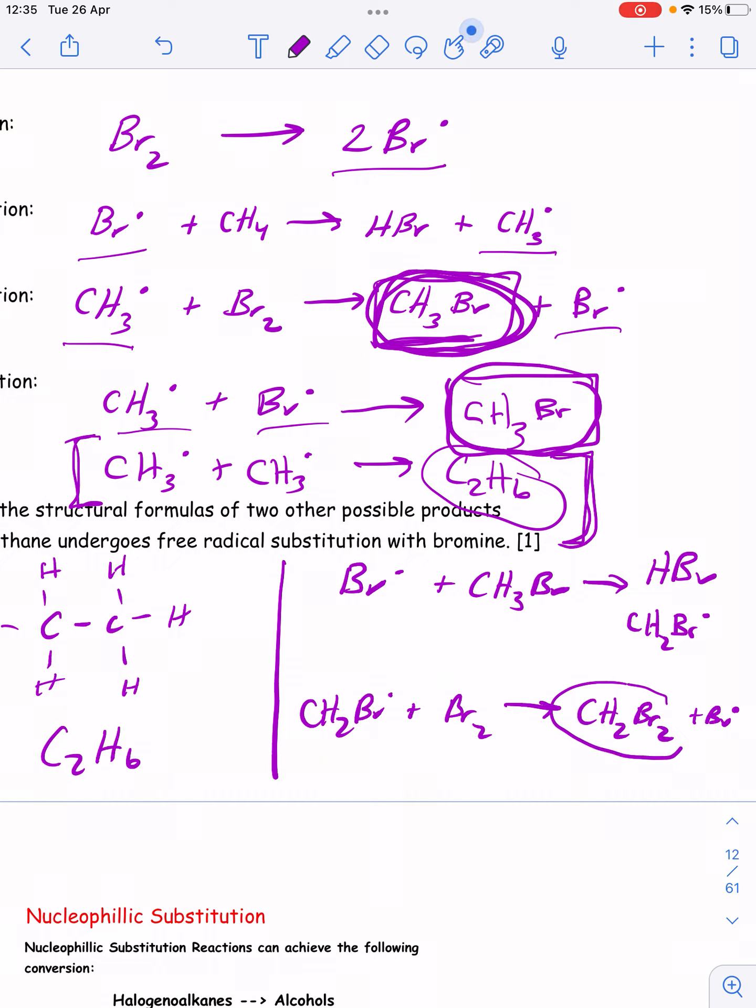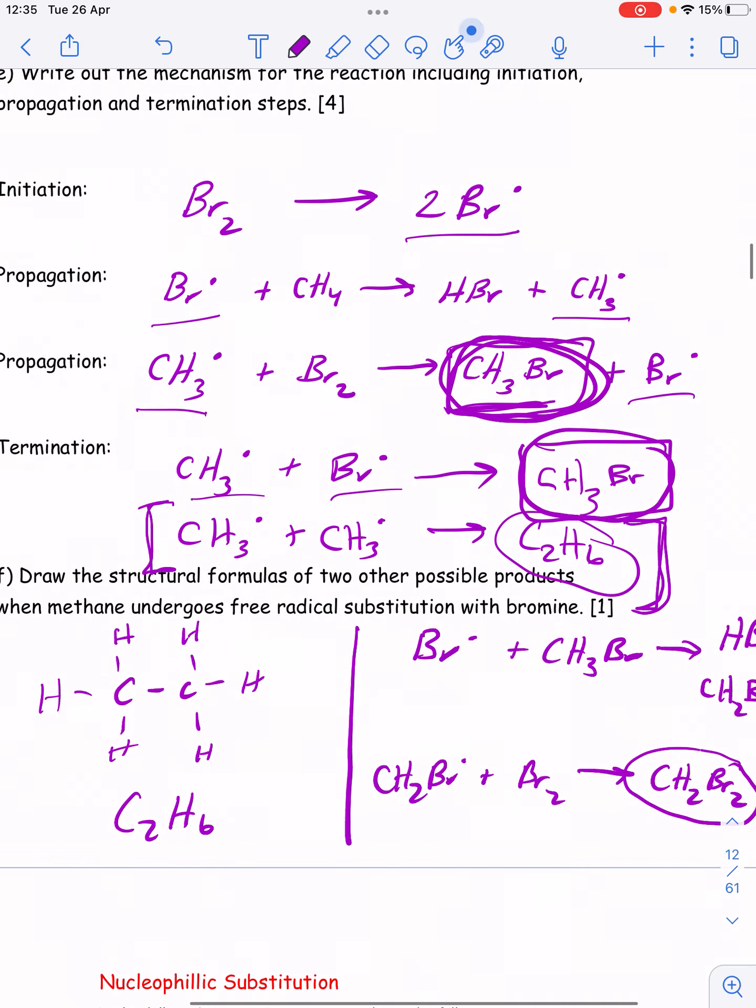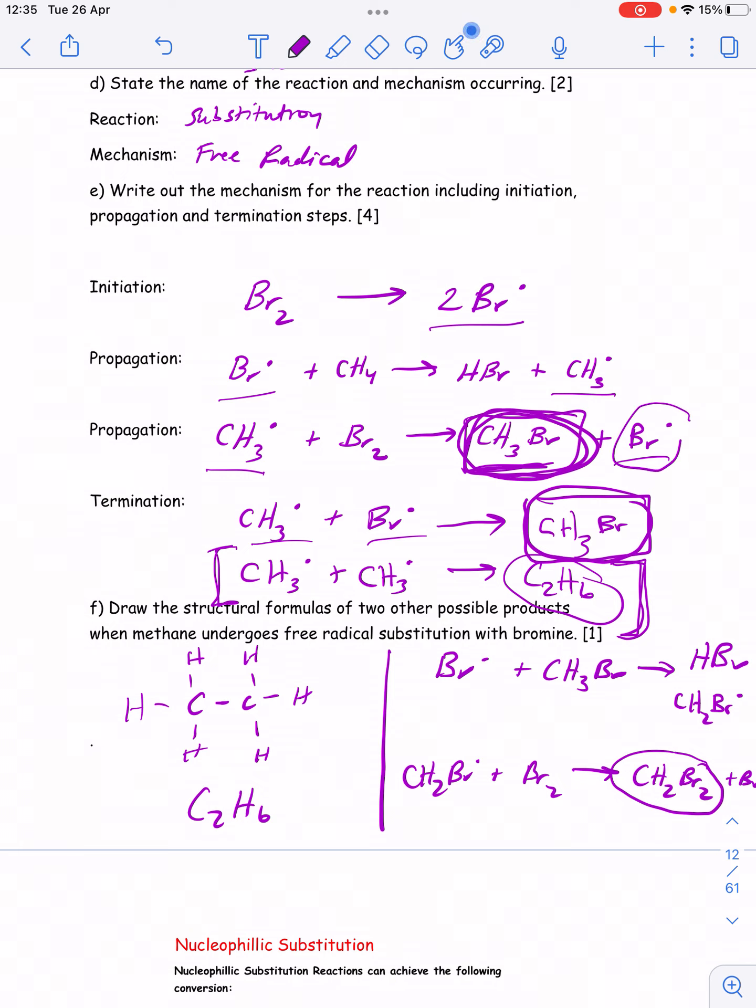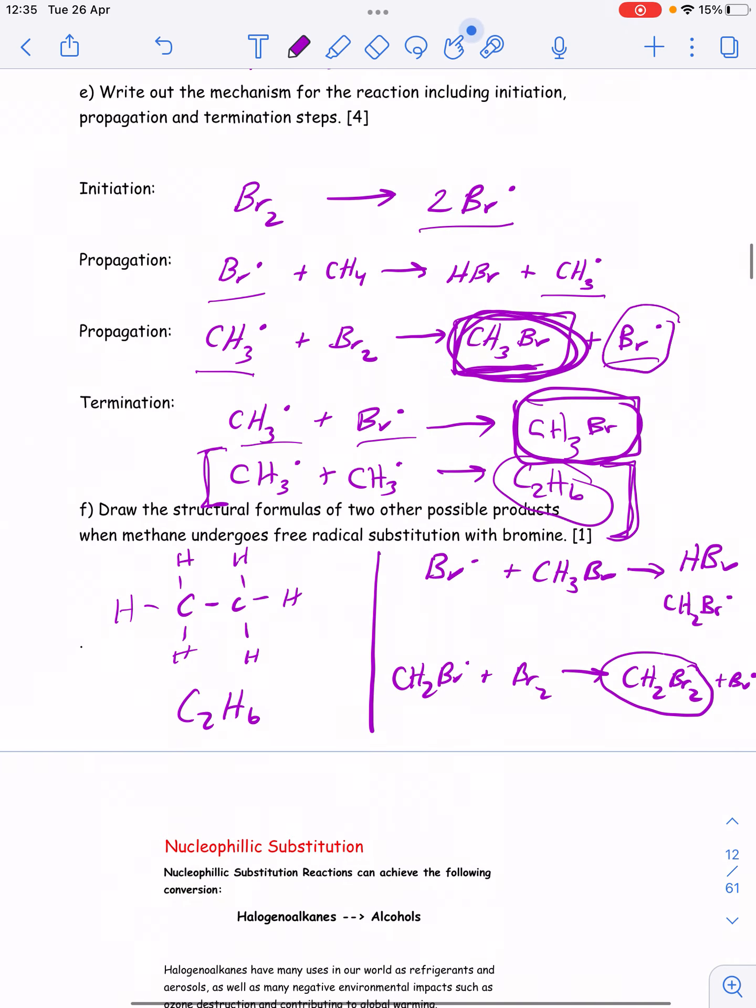You can substitute additional bromine atoms onto that same halogenoalkane. Another possible product would be dibromomethane, and then also tribromomethane and even tetrabromomethane. They're all possible products because this mechanism is hard to control. Because these radicals are so reactive, the radicals can continue to react with the halogenoalkane you formed to make other halogenoalkanes.